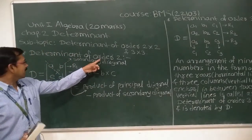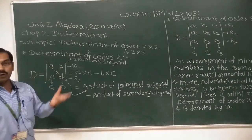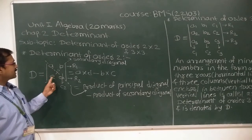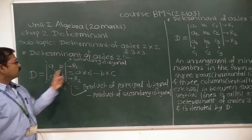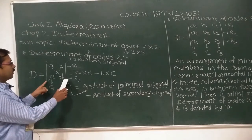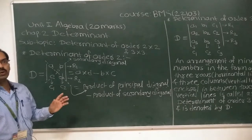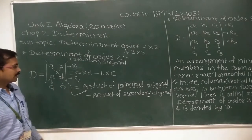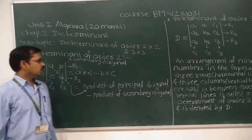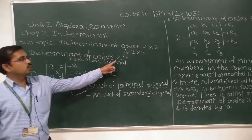An arrangement of four numbers — a, b, c, d — in the form of two rows and two columns enclosed between two vertical lines is called a determinant of order 2 by 2. And a into d minus b into c is known as the expansion of the determinant of order 2 by 2.